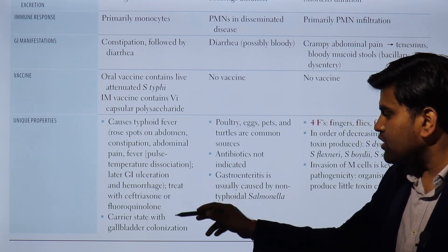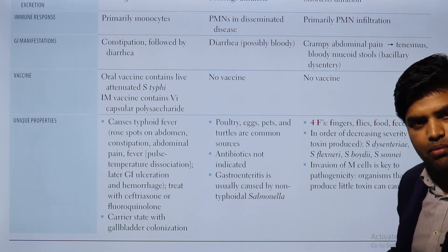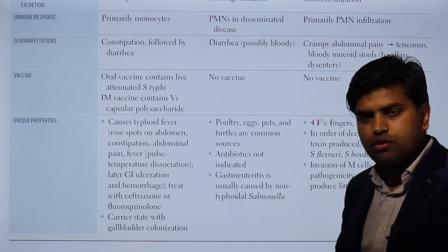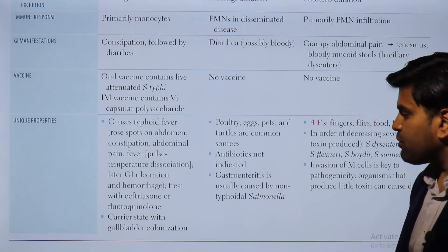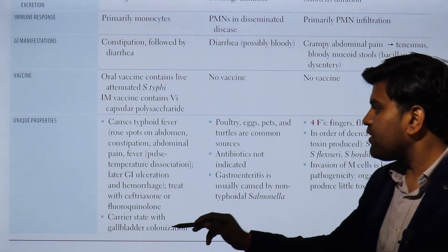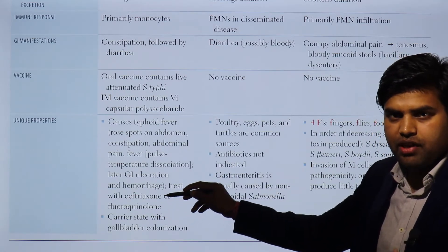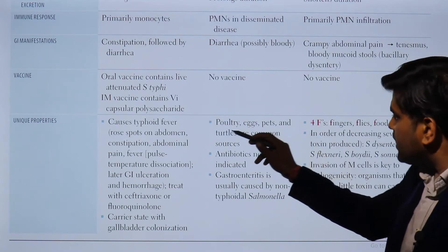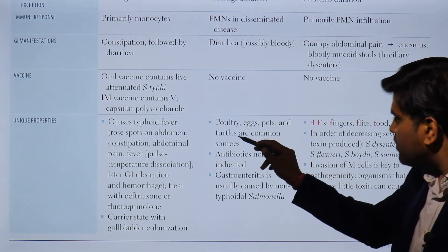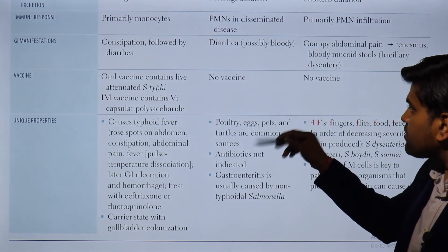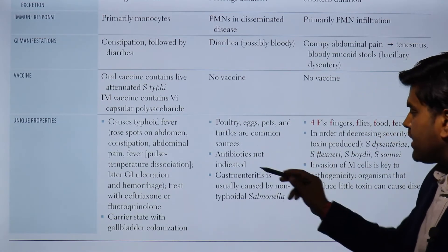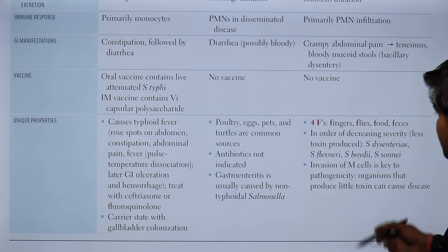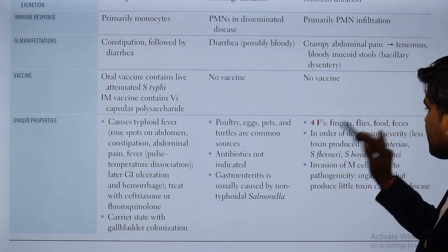Later complications include GI ulceration and hemorrhage. Treatment is with ceftriaxone or fluoroquinolones. In a carrier state, bacteria may colonize the gallbladder, requiring long-term ciprofloxacin treatment for months. Usually five to ten days of antibiotics are given for typhoid fever. Non-typhoidal Salmonella infection is associated with poultry, eggs, pets, and turtles. Antibiotics are not usually indicated for non-typhoidal Salmonella gastroenteritis.